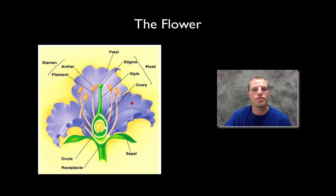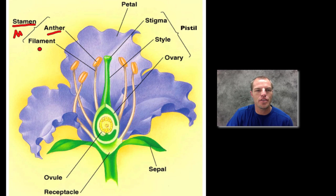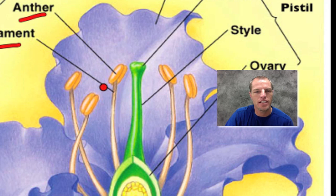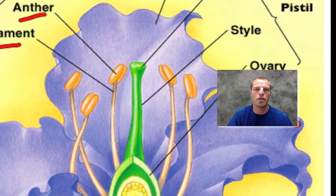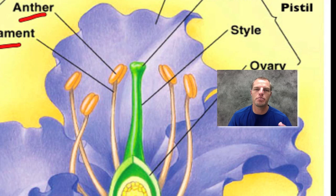The first thing I want to look at is the parts of a flower, because the flower is the reproductive structure of the plant. The first thing I want to look at is the stamen — the male reproductive structure of our flower. It consists of two parts: the anther and the filament. The anther's job is to produce the pollen, which carries sperm, the male reproductive cell, that will need to pollinate the female egg for reproduction to take place. The filament holds up the anther, and these two combined make the stamen.